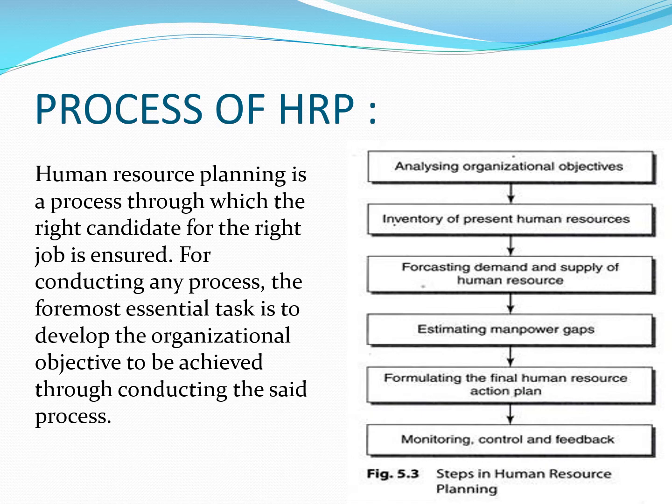The second step is inventory of present human resources. Third is forecasting demand and supply of human resources. Fourth is estimating manpower gaps. Fifth is formulating the final HR action plan. The last step is controlling, monitoring, and feedback — which is common across all processes.